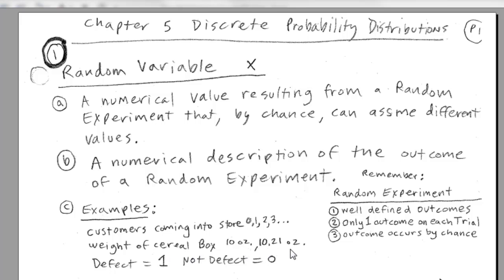Weight of a cereal box, that's another one. It's easy to tell that this is a number. But what about this one? The experiment's going to determine defect or not defect. How in the world are we going to get a numerical description for that? Well, we're going to assign it 1 or 0. Now, we're going to have two types of random variables.